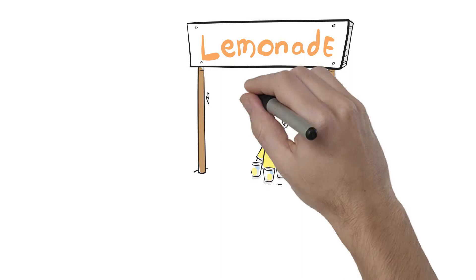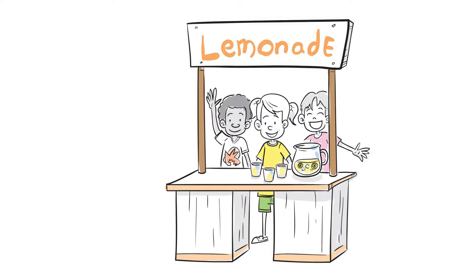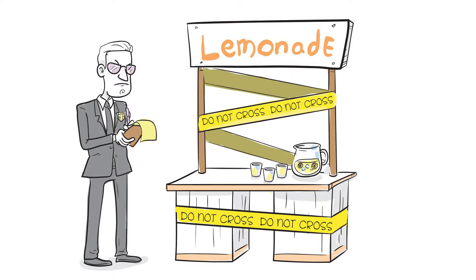However, for every enterprising kid who wants to put up a lemonade stand, it seems like there's a bureaucrat on his way to the scene of the budding little business with a ticket book in hand, ready to order that kid to cease and desist from his first attempt at entrepreneurship.